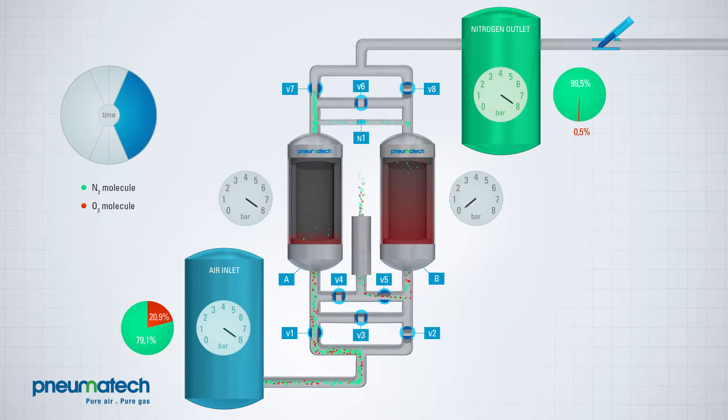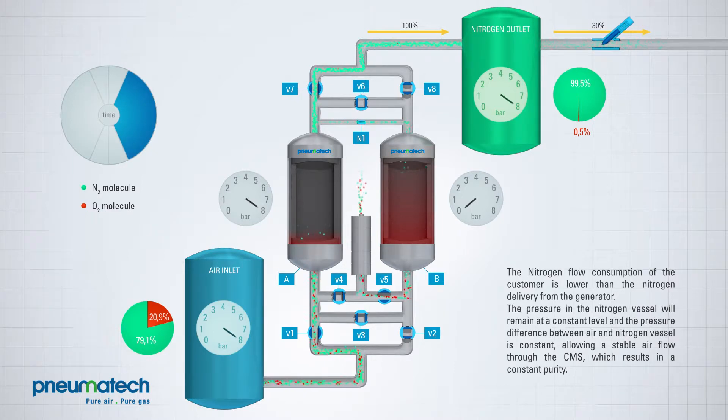The generator is sized to deliver 100% nitrogen to the nitrogen vessel during normal operation. When the customer's application consumes less than 100% of the generator's capacity, for example 30%, the generator is able to maintain the pressure in the nitrogen vessel at a constant level.